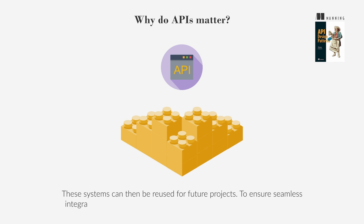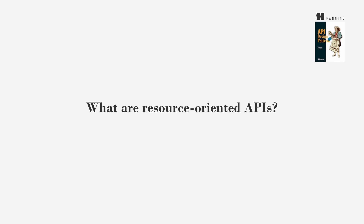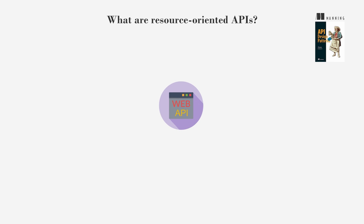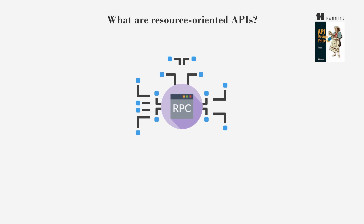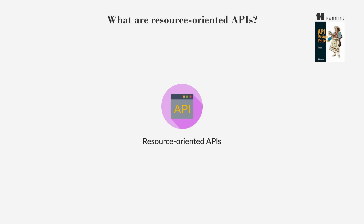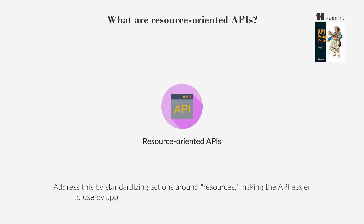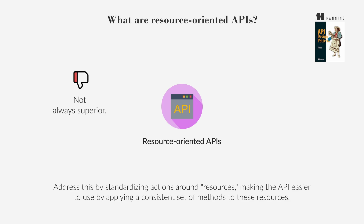To ensure seamless integration of APIs, a design strategy called resource-orientation is used. Web APIs can operate based on Remote Procedure Calls (RPC), which focus on executing specific tasks. However, this can become complex when dealing with stateful interactions. Resource-oriented APIs address this by standardizing actions around resources, making the API easier to use by applying a consistent set of methods. While not always superior, resource-oriented APIs often provide simplicity and ease of learning through familiar patterns.